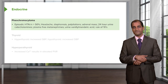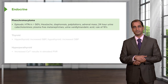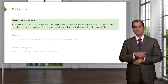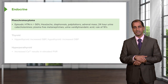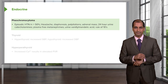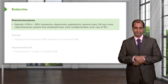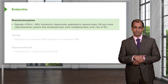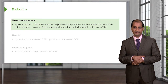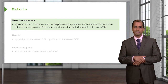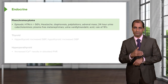Now we have pheochromocytoma. Where are you? Still in the adrenals, but in the medulla. In the medulla, you might have a tumor that produces too much epinephrine. Normally, 80% of your epinephrine comes from the adrenal medulla. Epinephrine works on catecholamine receptors — alpha-1, alpha-2, beta-1, beta-2. At low doses it works on beta; at higher doses it works on alpha, more like norepinephrine.